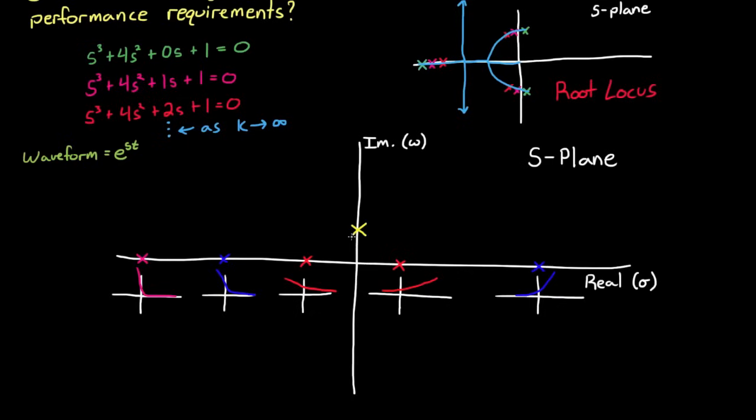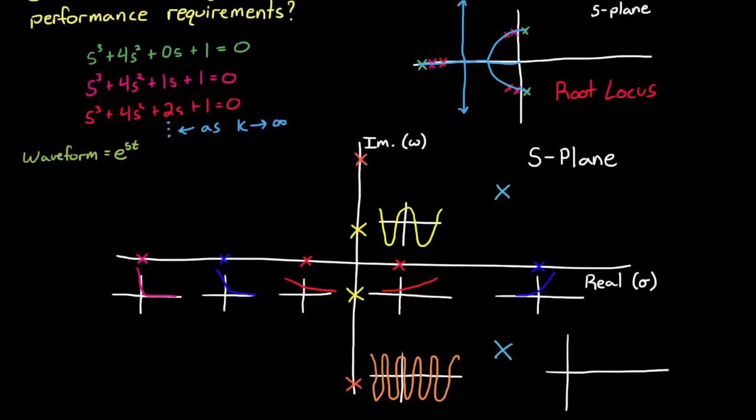In the right half plane, the real component corresponds with exponential growth. And again, the further you are from the origin, the faster that growth becomes. The imaginary value corresponds to sinusoidal motion, or oscillations, in the time domain signal. These locations always come in pairs that are complex conjugates of each other. These pairs of complex conjugates are the result of dealing with real time.